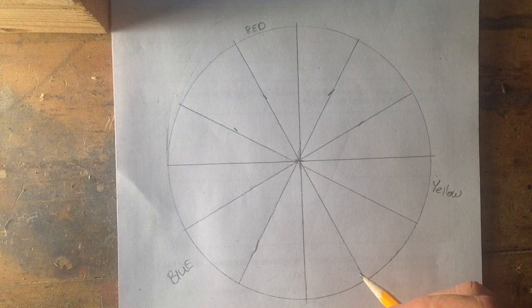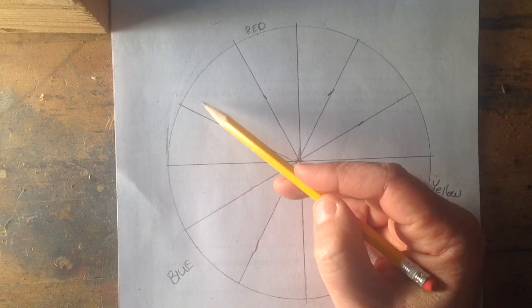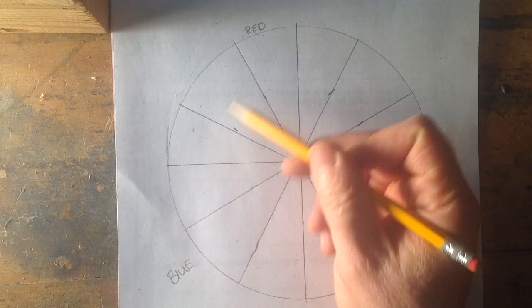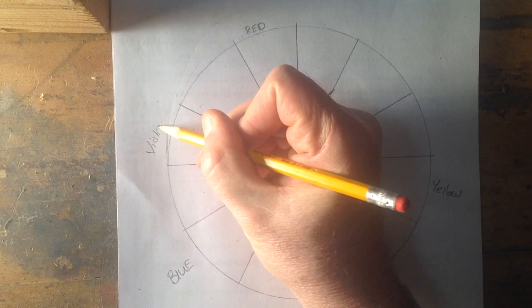Next I'm going to go ahead and start with my secondary colors. They'll be in the section directly in between the two primary colors. So not here, not here, but right here would be a secondary color. I know that when I mix blue and red together I'm going to get violet. So that's where violet goes.